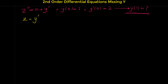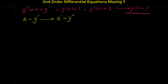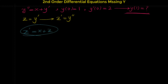Because y prime is z, if we take the derivative of this relation, z prime equals y double prime. Now, if we use this substitution in the differential equation — replacing y double prime with z prime and y prime with z — we get z prime equals x plus z. Now we have a first order linear differential equation, which we know how to solve.